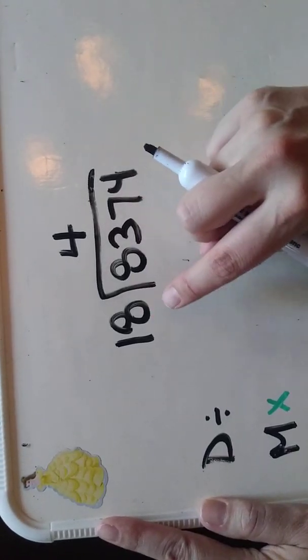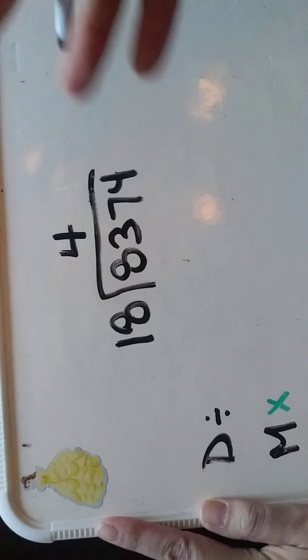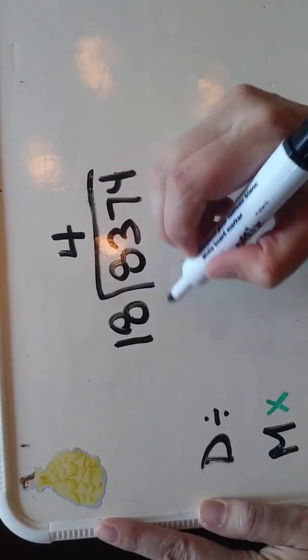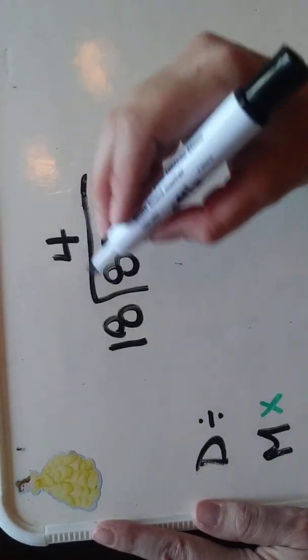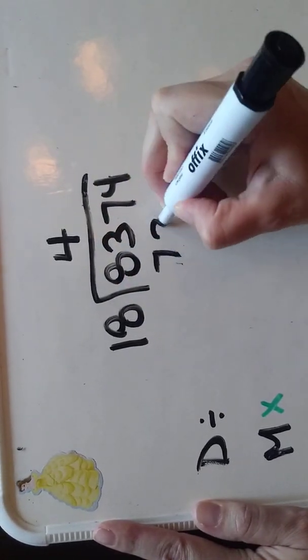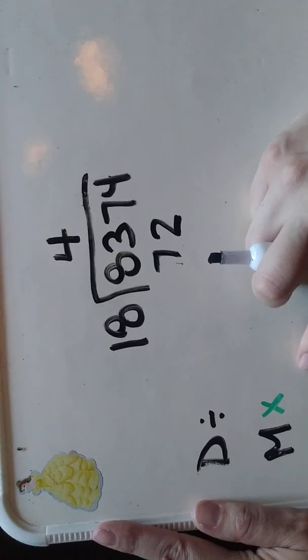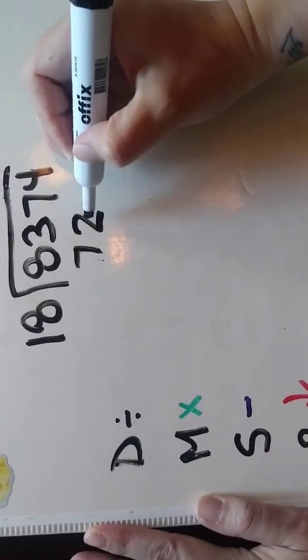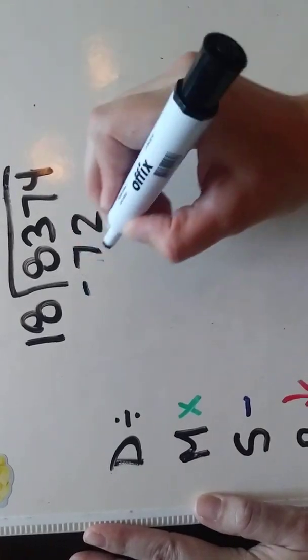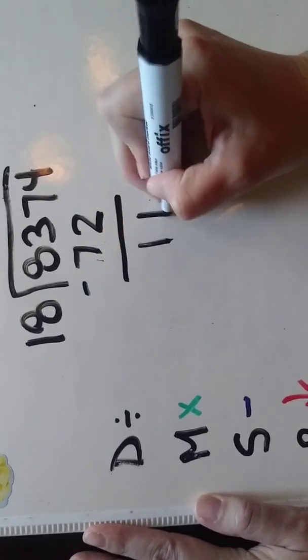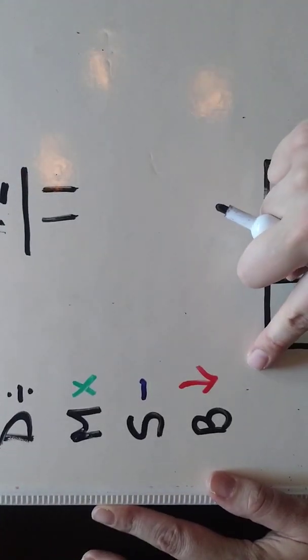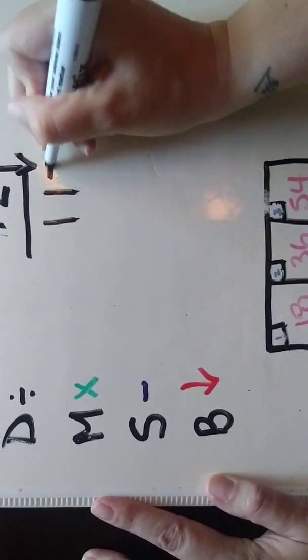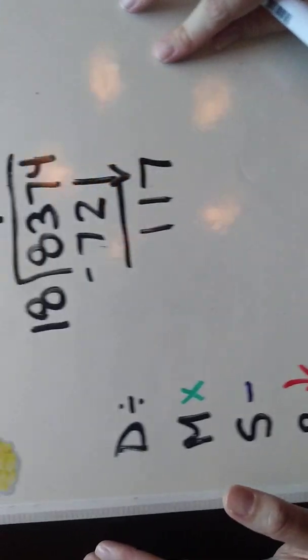83 divided by 18 is 4 and something but we're going to have a remainder in that case. So we have second step multiplication. 18 times 4 is 72. Next step subtraction. 83 minus 72 is 11. Next step is bring down. So I'm going to bring down the next number the 7. Again keeping my work nice and neat and lined up.